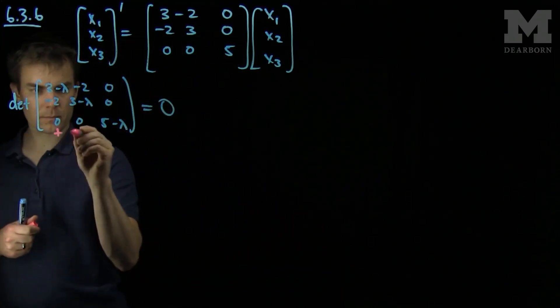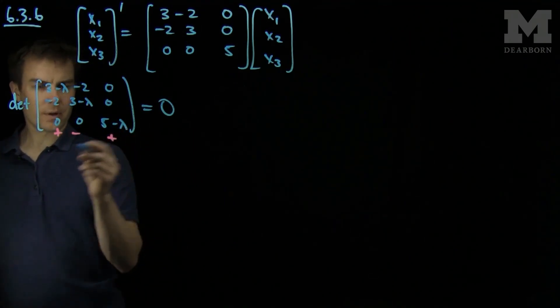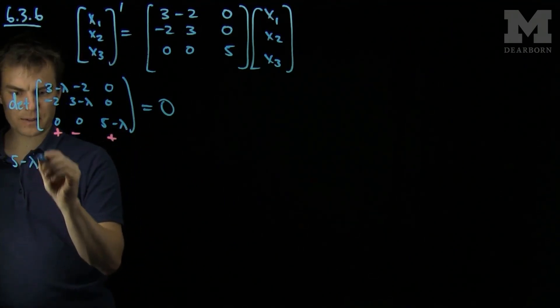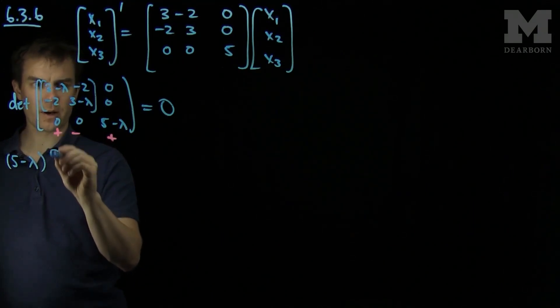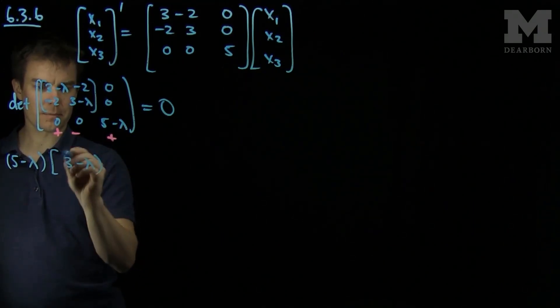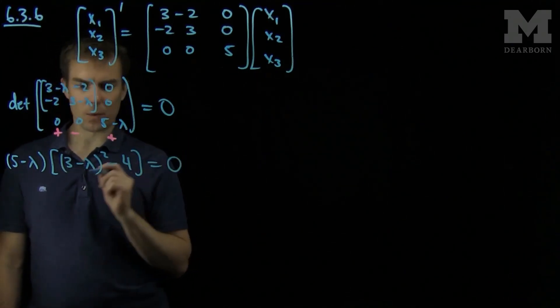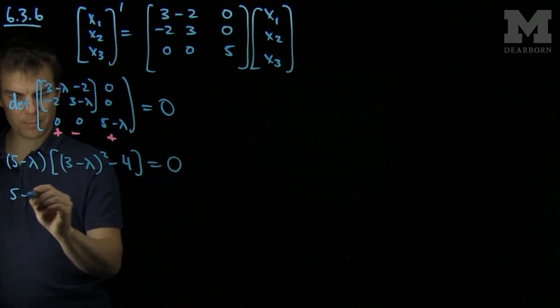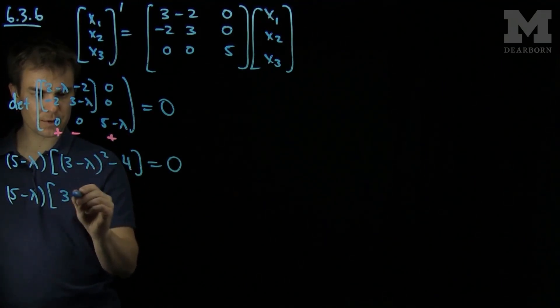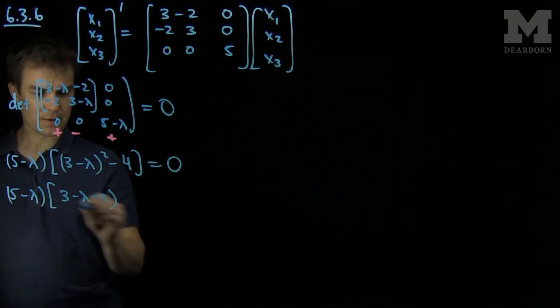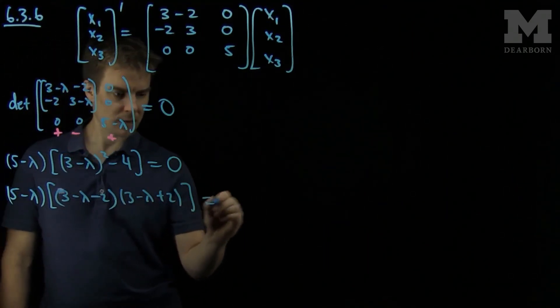Doing so we will have (5-λ) times this determinant over here, which we'll just evaluate: (3-λ)² - 4 = 0. The expression inside the parenthesis is a difference of two squares, so this is (3-λ-2)(3-λ+2) = 0.